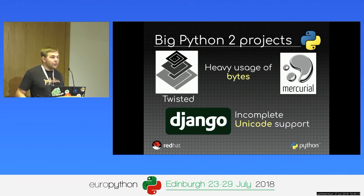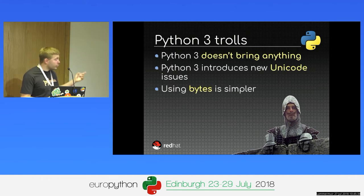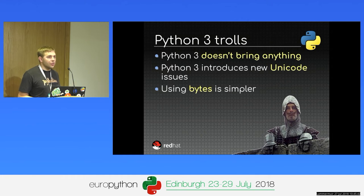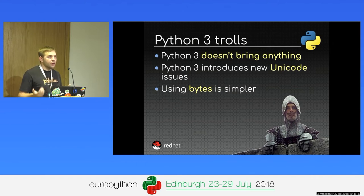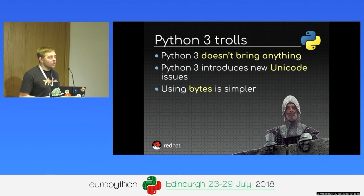For Django, when Python 3 was released, Unicode support was only at the beginning. Because it was very difficult to port code and nobody wanted to be first, we started to see Python trolls claiming that Python 3 doesn't bring anything. As I explained with the manager example, when you port code to Python 3 you still have the same features. And being forced to use Unicode properly was seen as too difficult, since Python 2 with bytes was simpler.